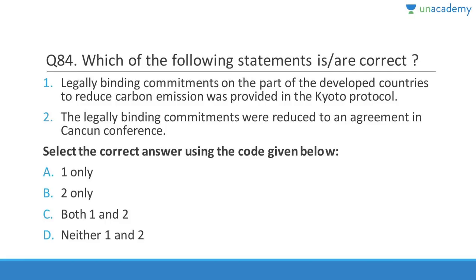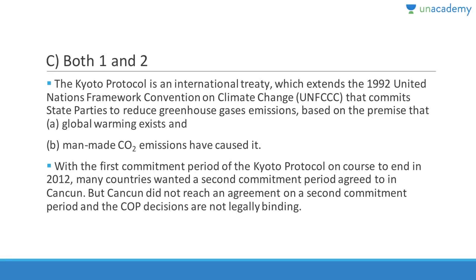Question 84: A legally binding commitment for developed countries to reduce carbon emissions was provided in the Kyoto Protocol — correct. The legally binding commitments were also addressed at the Cancun Conference — correct. The Kyoto Protocol is an international treaty extending the 1992 UNFCCC, committing state parties to reduce greenhouse gas emissions based on the premise that global warming is man-made (anthropogenic CO2 emissions).